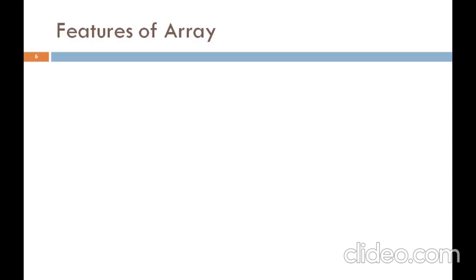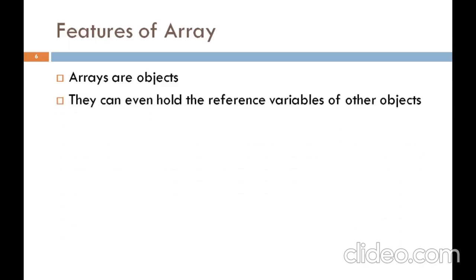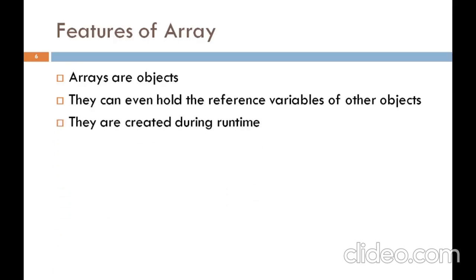Now we discuss the features of arrays in Java. First, arrays are object type. In C and C++, arrays are a derived type, but in Java, arrays can be of primitive and non-primitive data type — meaning we can declare arrays with primitive data types as well as non-primitive (reference) data types. Arrays can even hold reference variables of other objects. They are created during runtime — we can create an array at runtime. They are dynamically created on the heap.